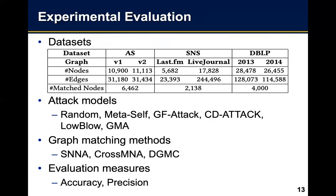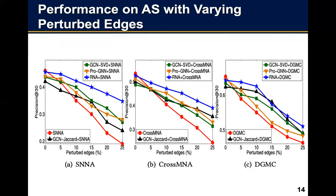In this work, we performed extensive evaluation on three groups of datasets. We compared with several state-of-the-art attack models and graph matching methods, using accuracy and precision to evaluate quality of network alignment. The results show that among four perturbation elimination methods, the results by our proposed RNA model on both original and attacked networks achieved the best quality in most experiments, demonstrating the effectiveness and robustness of our proposed RNA model.